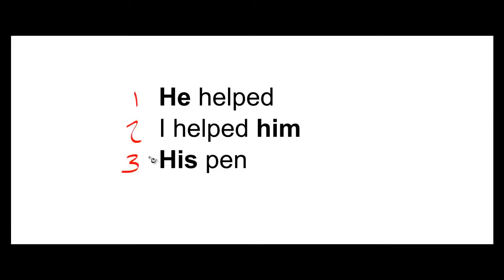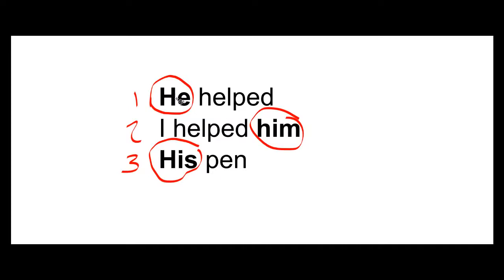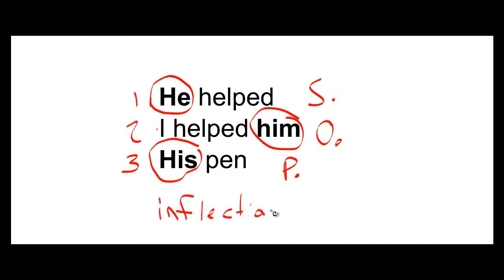Before we start lesson 9, I want everyone to look at these 3 English sentences. The pronoun he, him, and his is the same masculine pronoun, but because of its position in the sentence, the way it is written has changed. Here it's 'he helped' where he is the subject, then when it's the object it's 'I helped him' not 'I helped he', and when it's in possession of an object it's 'his pen'. In English this is called inflection in grammar.